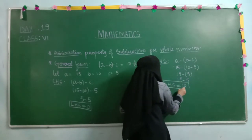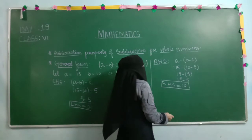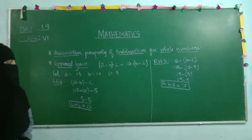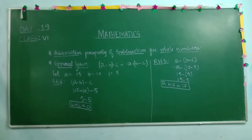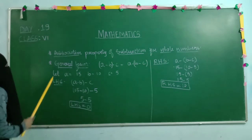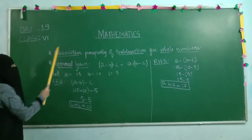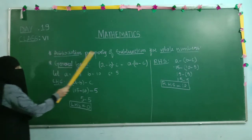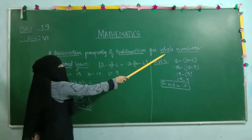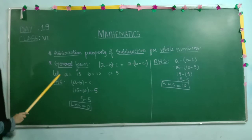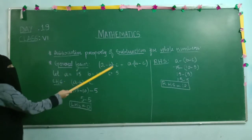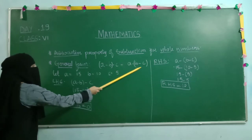Now let's check whether RHS and LHS are equal or not. We got LHS as 0 and RHS as 10. They are not equal. So we need to say that associative property of subtraction for whole numbers is not satisfied. The general form is: (A minus B) minus C equals A minus (B minus C).